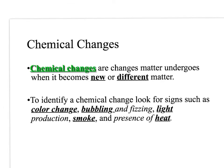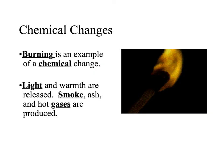Chemical changes are changes that matter undergoes when it becomes new or different matter. To identify a chemical change, look for signs such as a color change, bubbling, fizzing, light being produced, smoke, and the presence of heat. Burning is an example of a chemical change — light and warmth are released, and smoke, ash, and hot gases are produced.